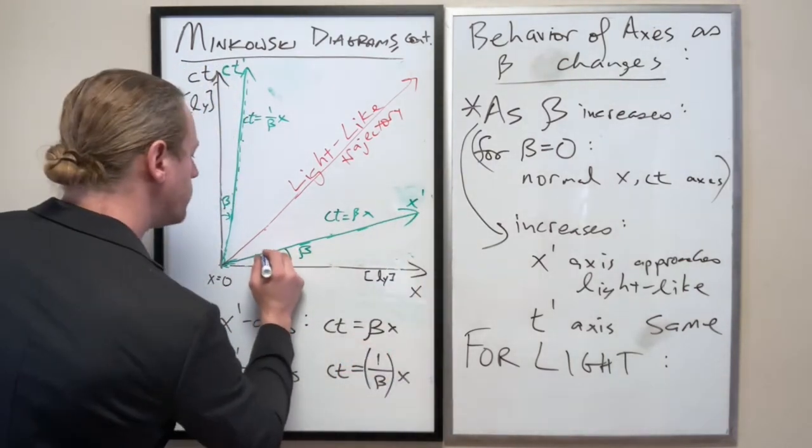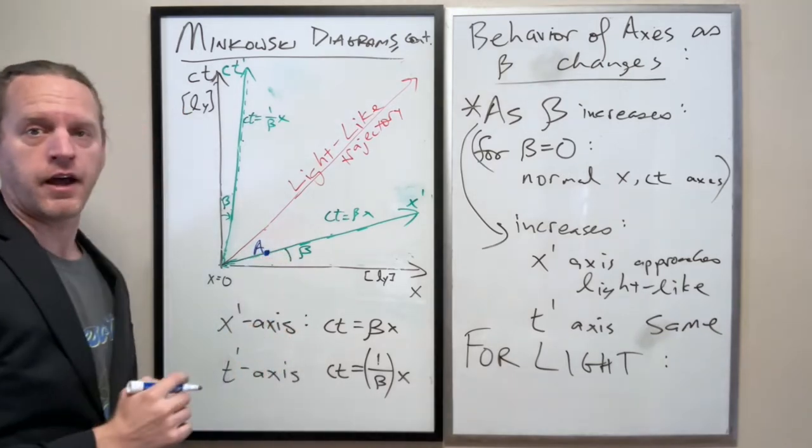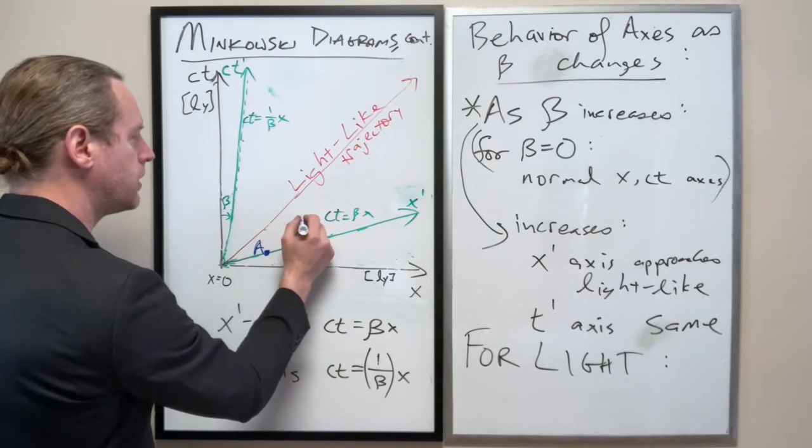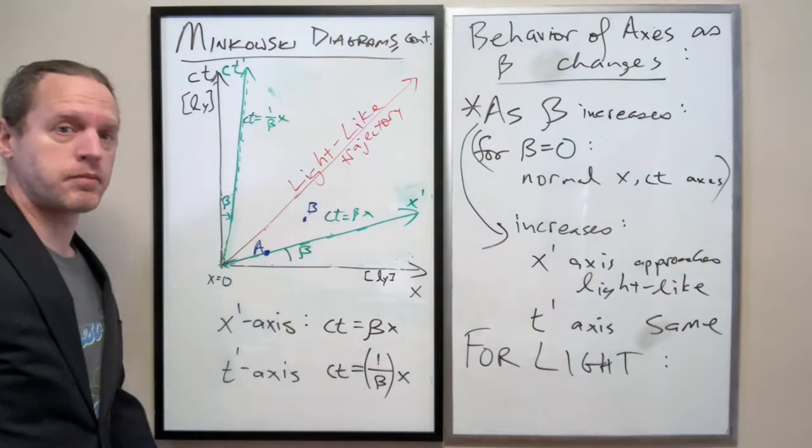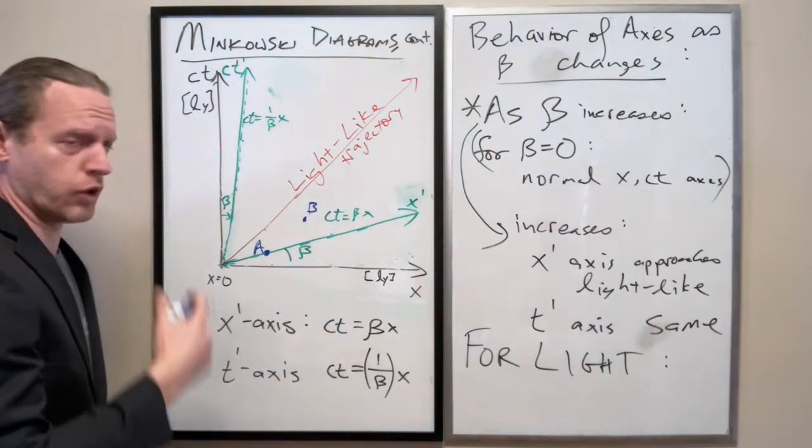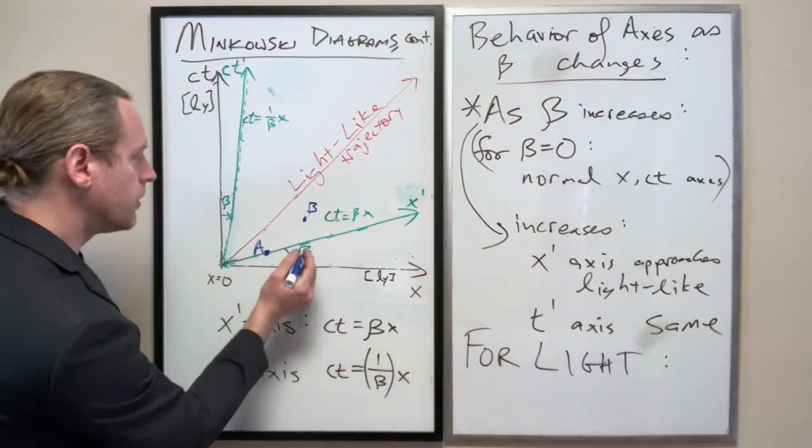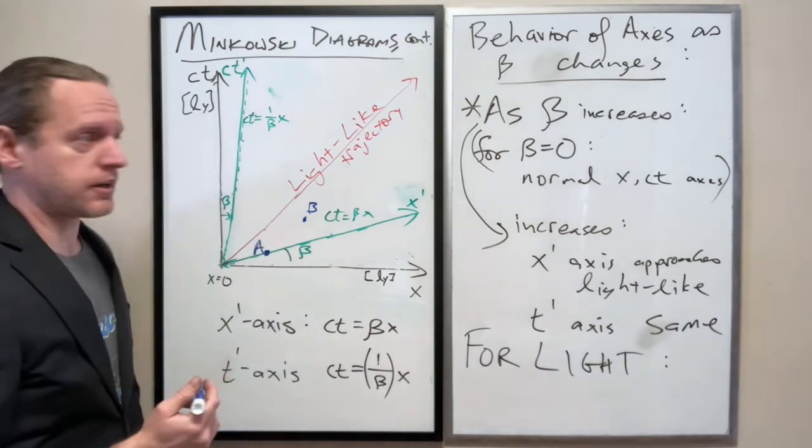So you have one event here, a, at that line, and another event, b, happening later, or happening there. Now, is that later? And the answer is yes.